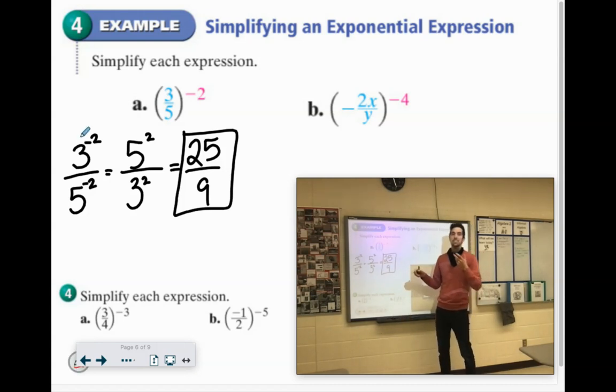Or if you have the entire fraction being raised to a negative exponent, you can flip the fraction. And remember, when you flip a fraction, that's called a reciprocal. So we can make this 5 over 3 and then make it to the positive second power.